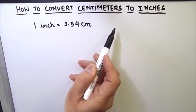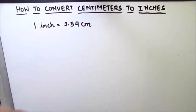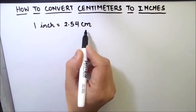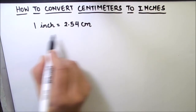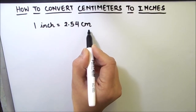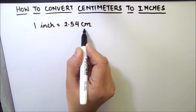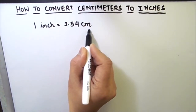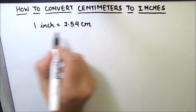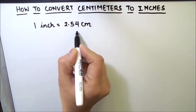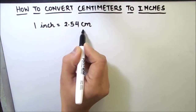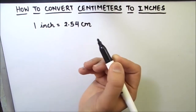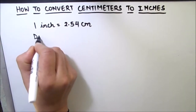So now we know how much is one inch. We need to find out how much is one centimeter. For finding how much is one centimeter, we need to divide both sides by 2.54.